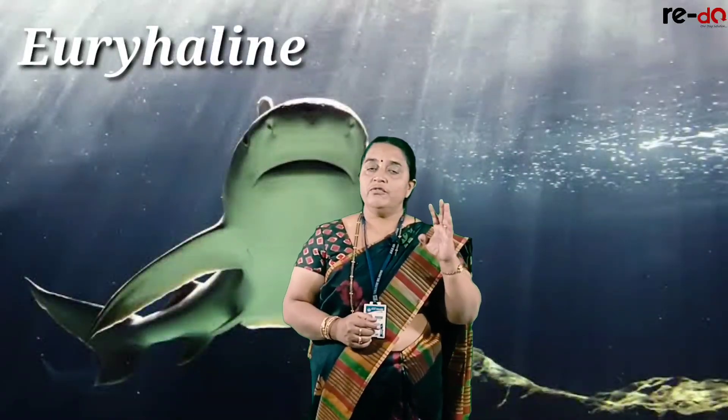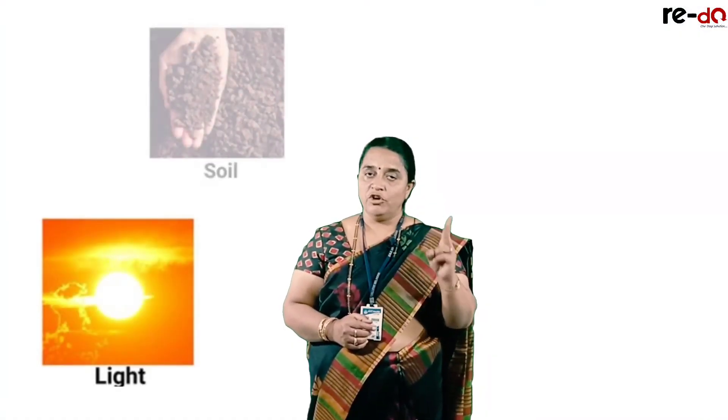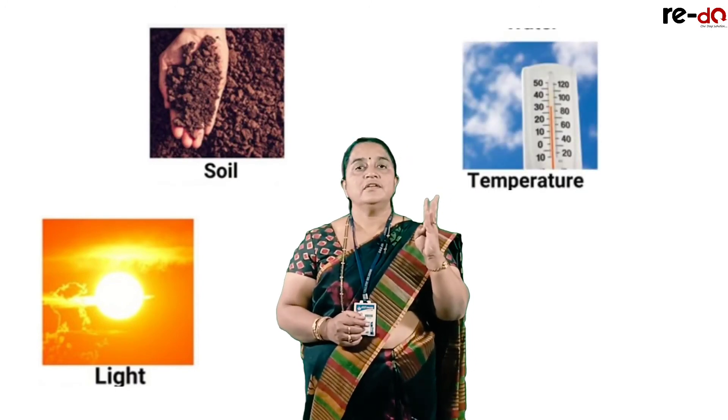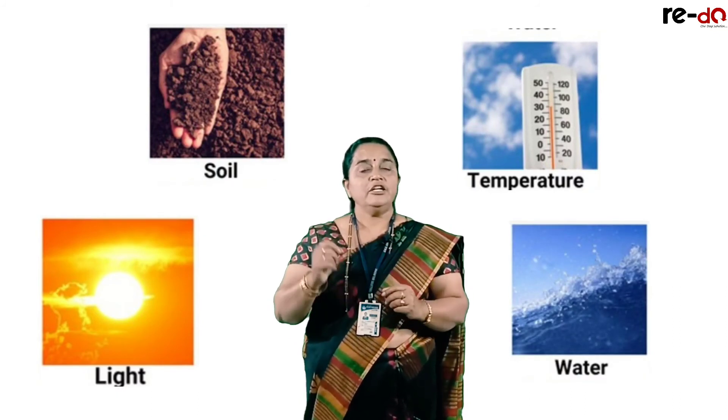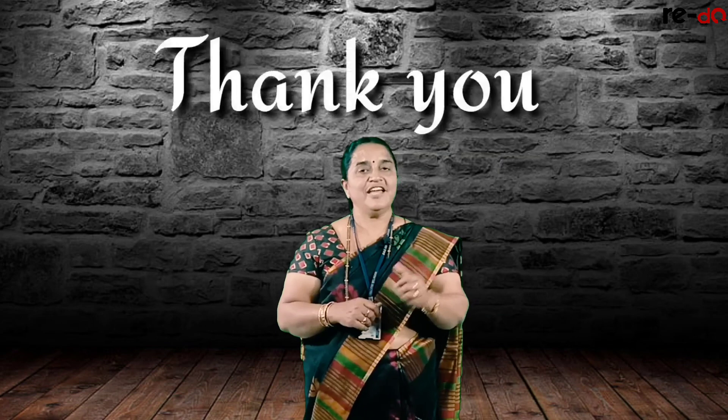So in these four major abiotic factors — sunlight, soil, temperature, and water — we discussed their impact on the survival of organisms. One question will definitely come from these major abiotic factors. In the next session, let us discuss how the biotic communities are responding to these major abiotic factors. I will stop here. Thank you very much.